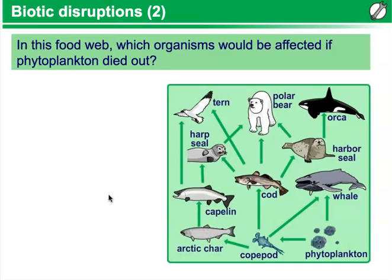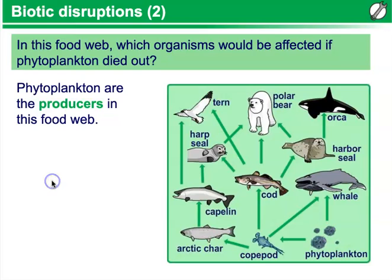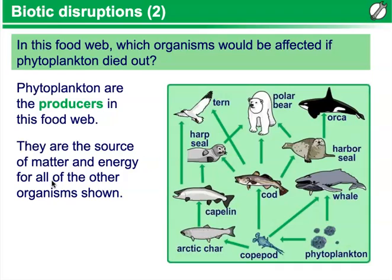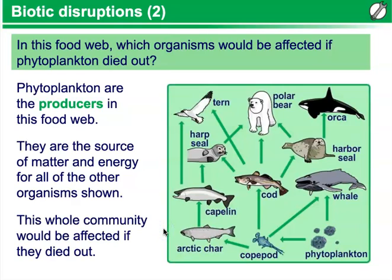In this food web, which organisms would be affected if phytoplankton died out? Phytoplankton are the producers in this environment. They are the source of matter and energy for all of the other organisms. So this whole community would be affected if the phytoplankton died out.